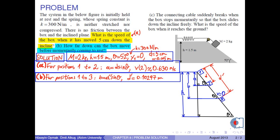Part C: The connecting cable suddenly breaks when the box stops momentarily, so that the box slides down the incline freely. What is the speed of the box when it reaches the ground?